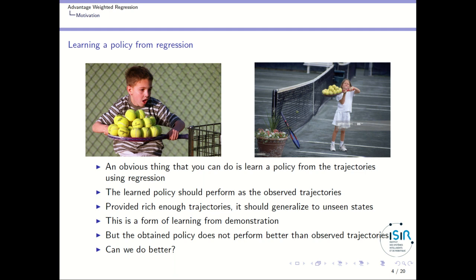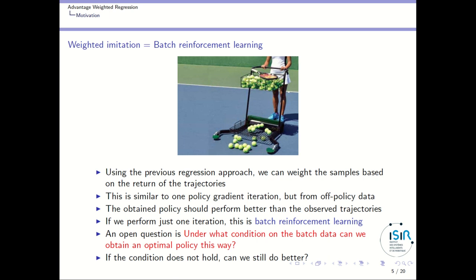But the point is that the obtained policy does not perform better than the observed trajectories. The question is: can we do better? Yes, we can. Using the previous regression approach, what we can do is weight the samples with a higher return more heavily. We weight the samples based on the return of the trajectory, which means that we imitate a lot the trajectories which gave high return and don't imitate much the trajectories which gave low return. This is very similar to policy gradient iteration but from off-policy data, and the obtained policy should imitate the good trajectories more than the bad ones, so it should perform better than the observed trajectories.